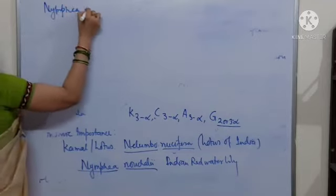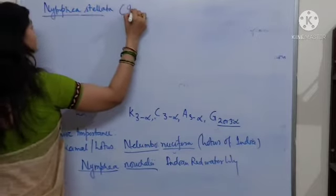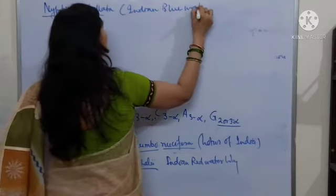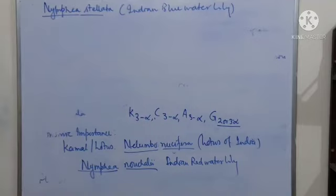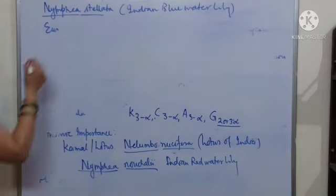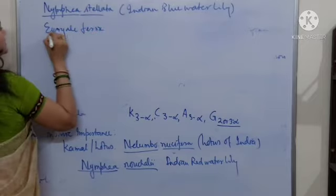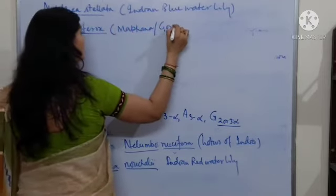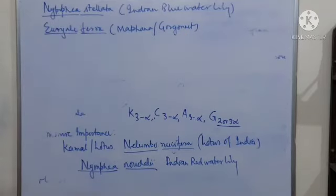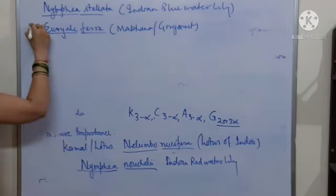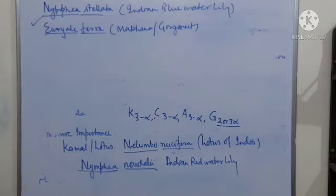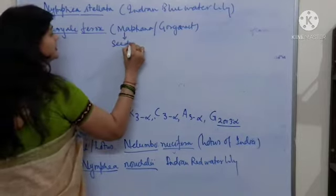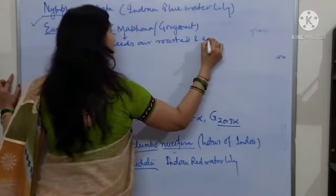Nymphaea nouchali is also known as Indian Red Water Lily and is known for its beautiful flowers. Next is Indian Blue Water Lily, which is known as Nymphaea stellata and is blue in colour. Another economically important plant is Euryale ferox, commonly known as Makhana or Gorgon nut. Its seeds are roasted and eaten as a dry fruit.